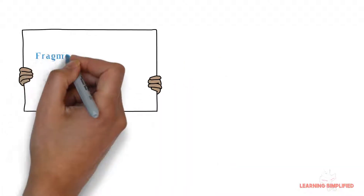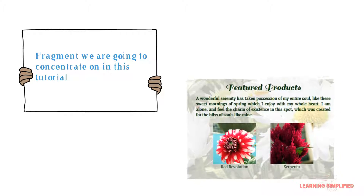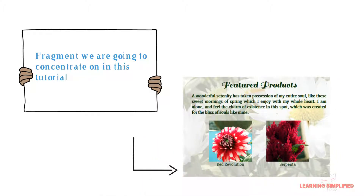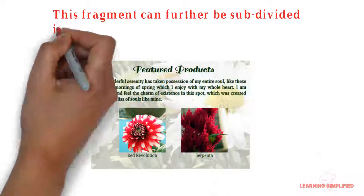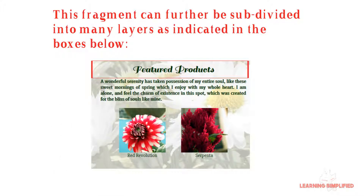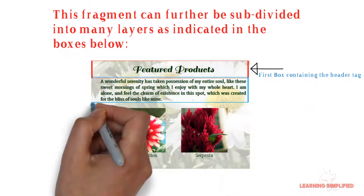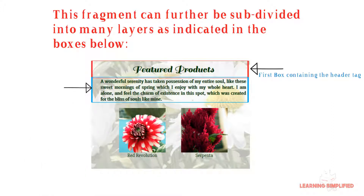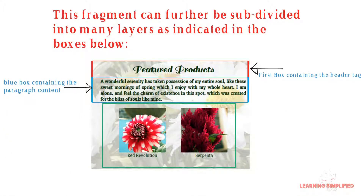Hello and welcome to another new episode of Learning Simplified. In this part we are going to consider this fragment — this is the fragment we are going to concentrate on in this tutorial. Now this fragment can further be subdivided into three main layers: the red box that will hold the featured products headline, the second div that will hold all the paragraph contents inside, and the green box that will hold all the images and captions.